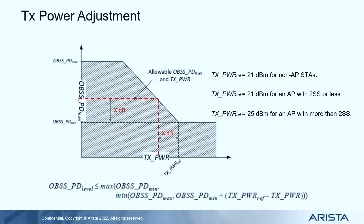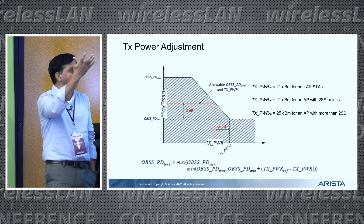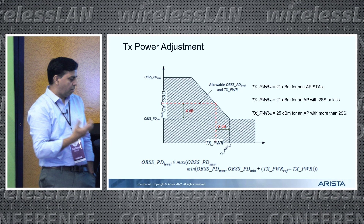The obvious question is: if you're reducing the power, what happens to MCS? At full power you might be using MCS 11, but if you go down 10 dB in power, you obviously have to reduce the MCS. So there is another cost — even though you get more opportunities to transmit, your MCS will typically be lower because you are operating at lower power. In order to maintain SNR, you will have to reduce your MCS. The original transmission can use normal link adaptation, but the secondary transmission must have a different logic for MCS selection.